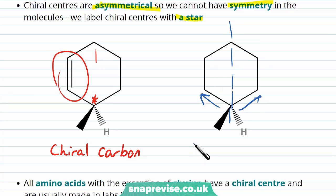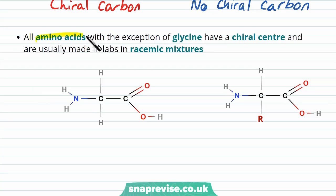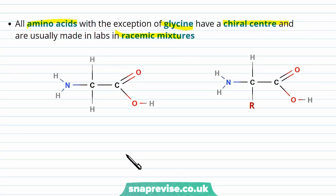One example of molecules that often contain chiral carbons is amino acids, and in fact, with the exception of glycine, they all have a chiral centre, and are usually made in labs in racemic mixtures, which, remember, means that we have 50% of each type of isomer. So on the left here, we show glycine, which is where the extra group on the carbon is also a hydrogen. So we do not have four different groups. So this has no chiral centre.